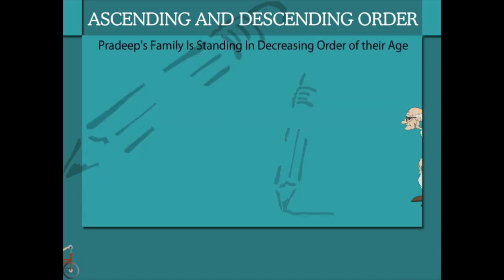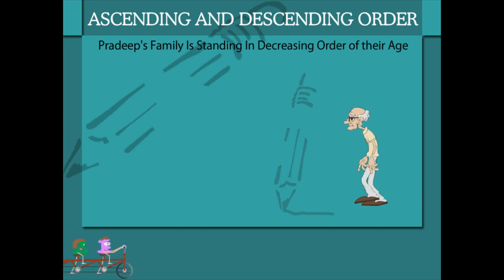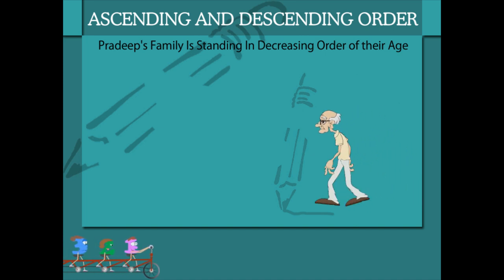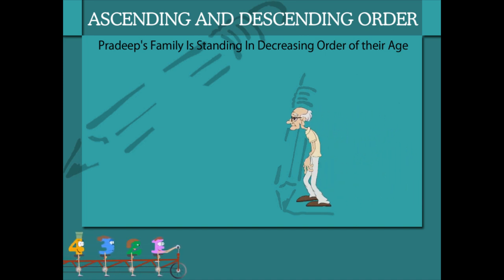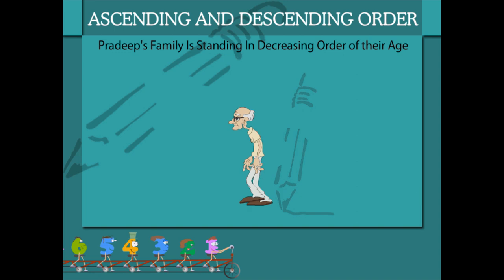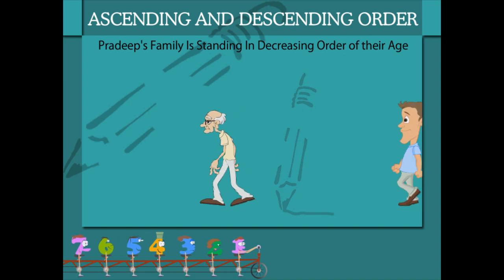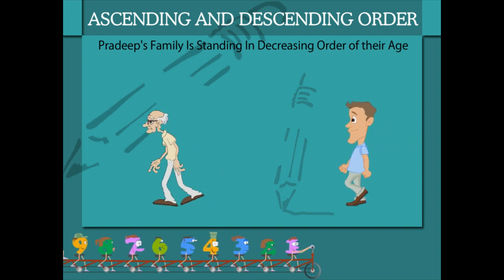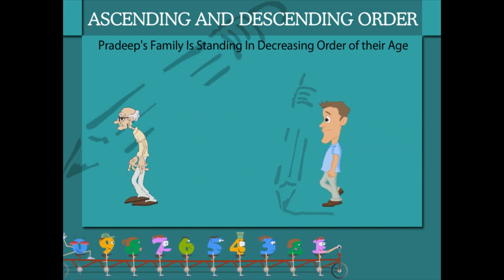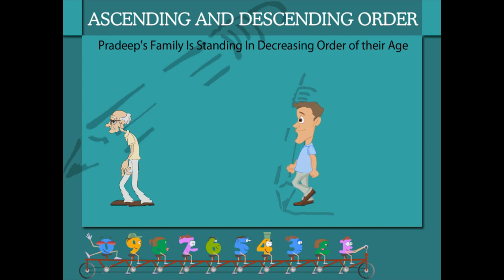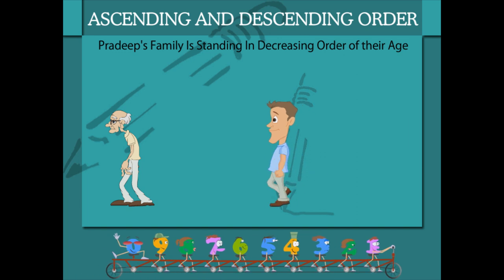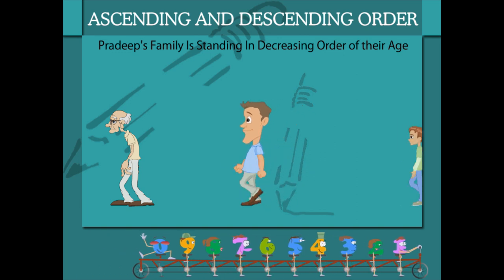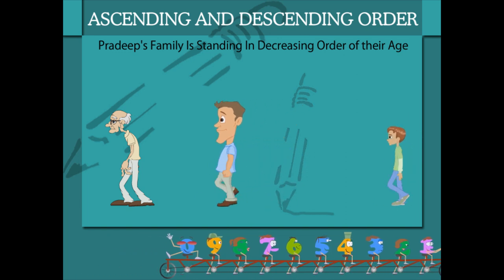Descending order is the opposite of ascending. Here is Pradeep's grandpa, an old man of 70. Grandpa is followed by Pradeep's daddy. He is 40 years old.